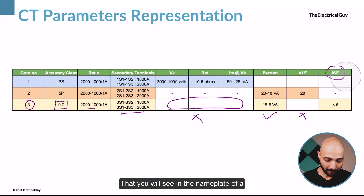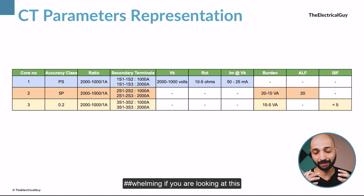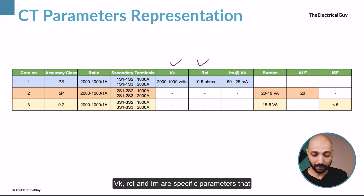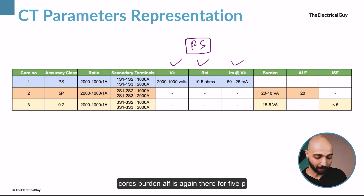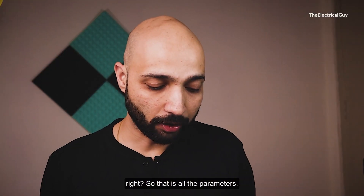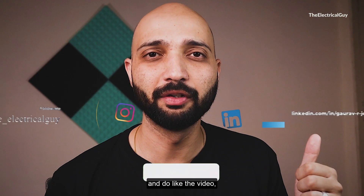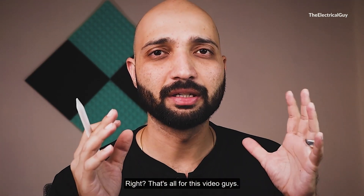These are all the parameters you will see on the nameplate of a current transformer. To quickly summarize: for PS special protection core, VK, RCT, and IM are specific parameters not present in other cores. For 5P protection core, burden and ALF are the relevant parameters. For the 0.2 metering core, ISF — instrument safety factor — is the special parameter. I hope this video has helped you understand how these parameters are represented. If you found it helpful, please comment, like the video, and check the playlist link in the description.